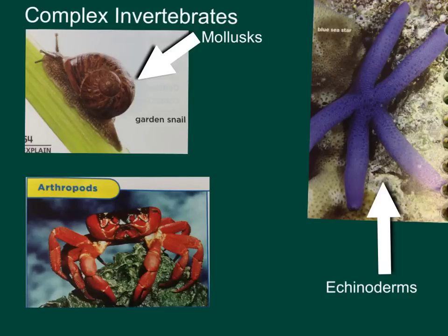Now we have arthropods. You see the picture of the crab — that's only one of many arthropods. There are several: you have your arachnids and spiders, your insects, your lobsters, your crabs, your centipedes, your millipedes. This is the largest invertebrate group — half of the world's species are arthropods.